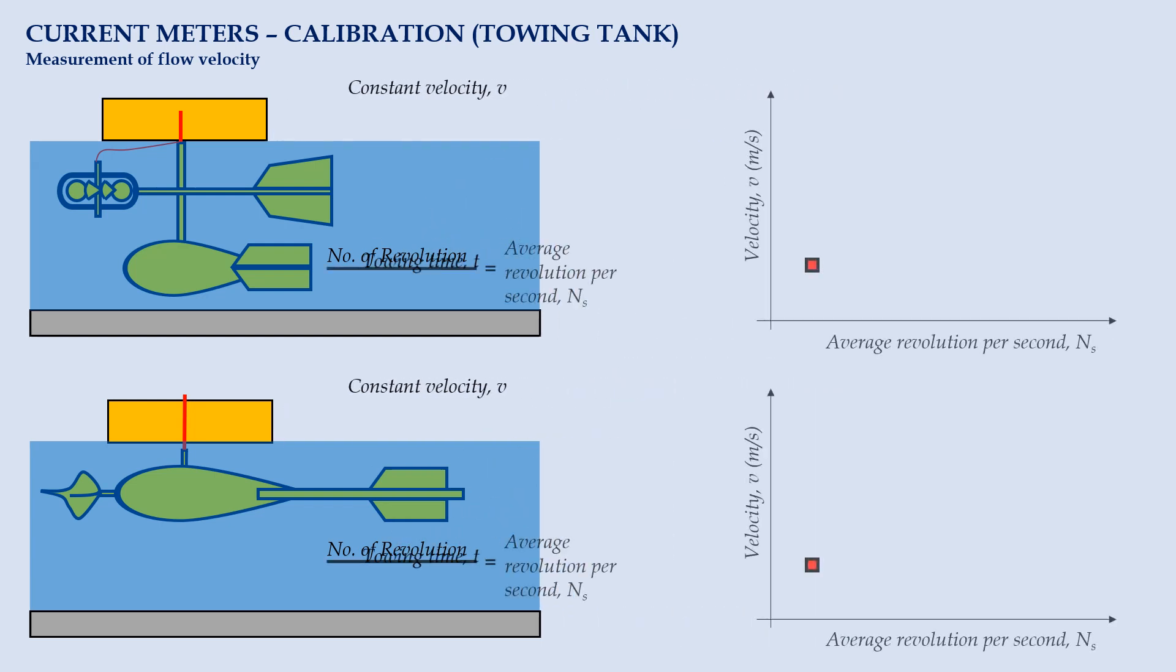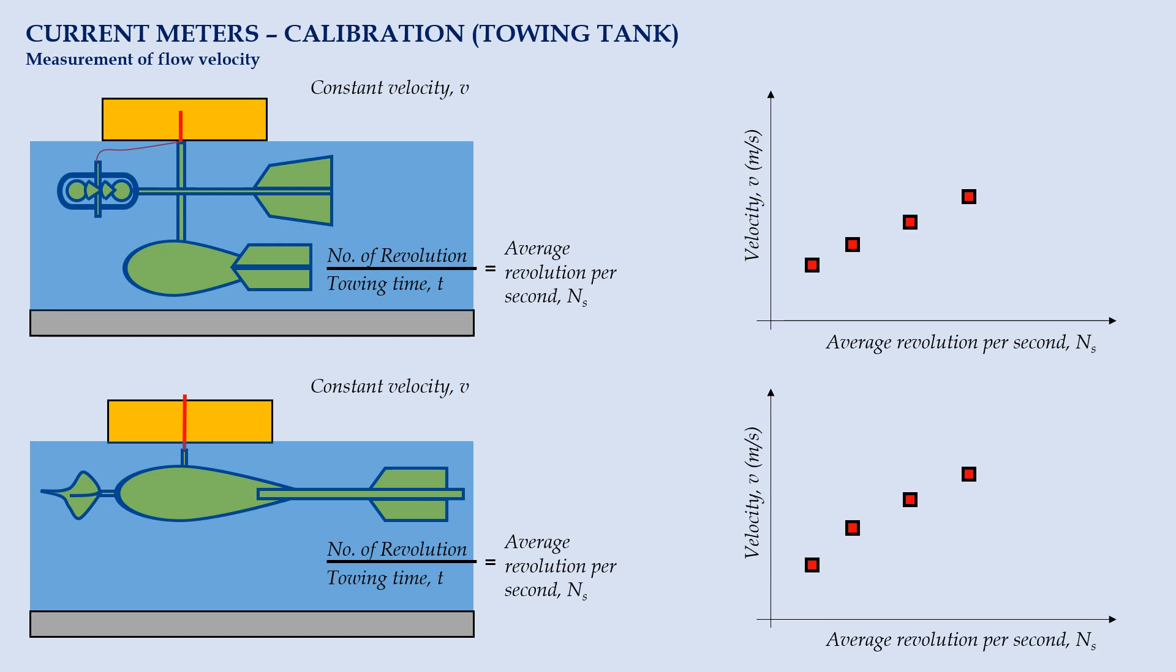The experiment is repeated with different towing speed. At the end of the experiment, we can plot the graph of velocity against average revolutions per second and find the best fit line that yields the calibration equation. The calibration of instrument may need to be done occasionally to ensure its accuracy.